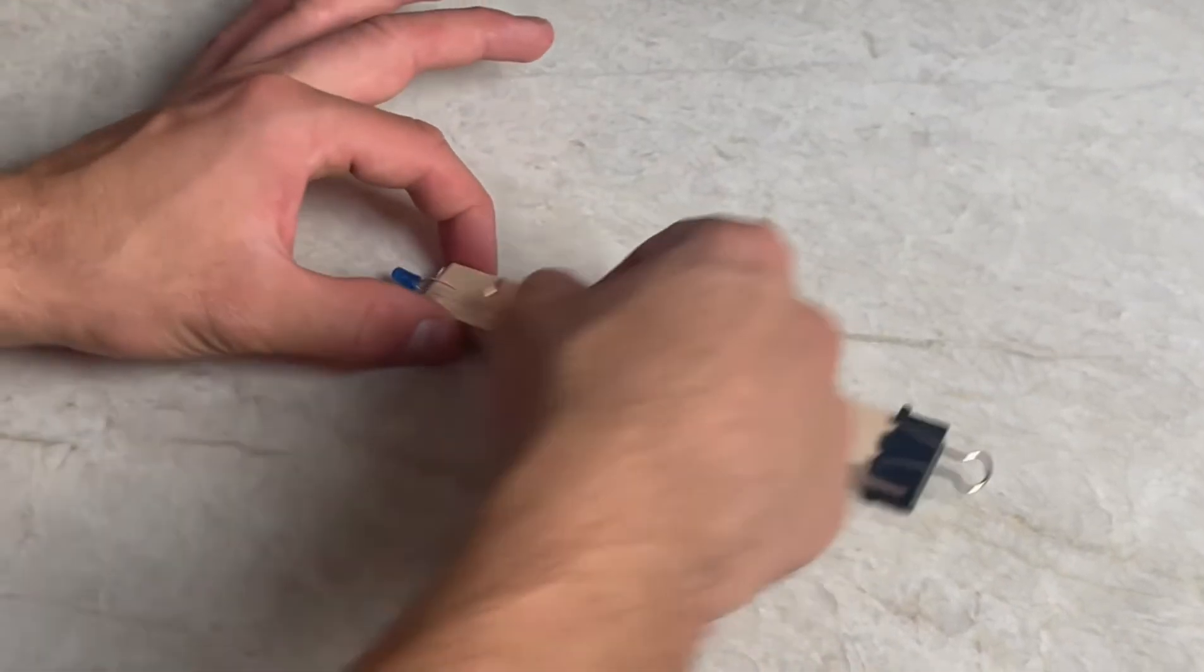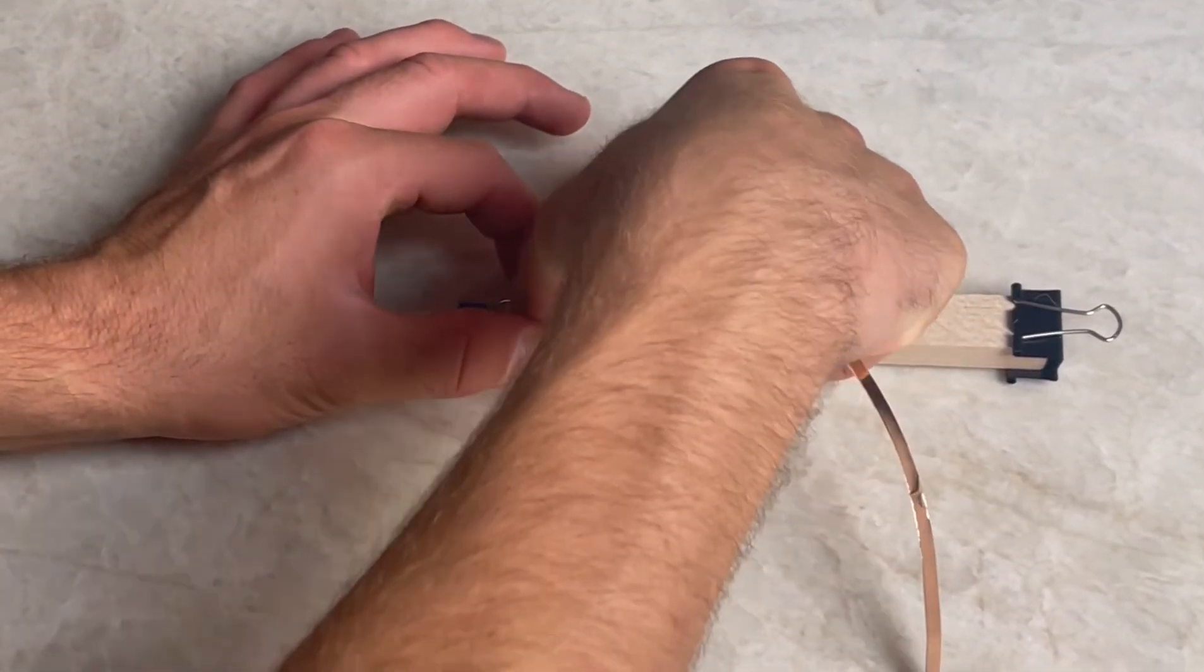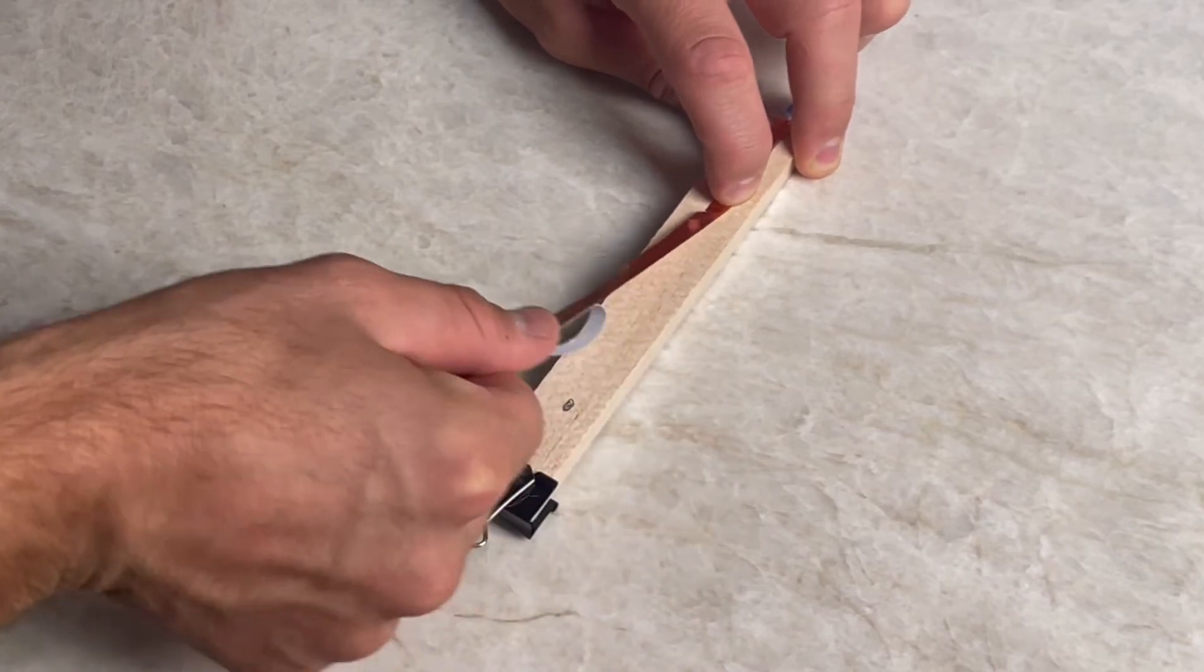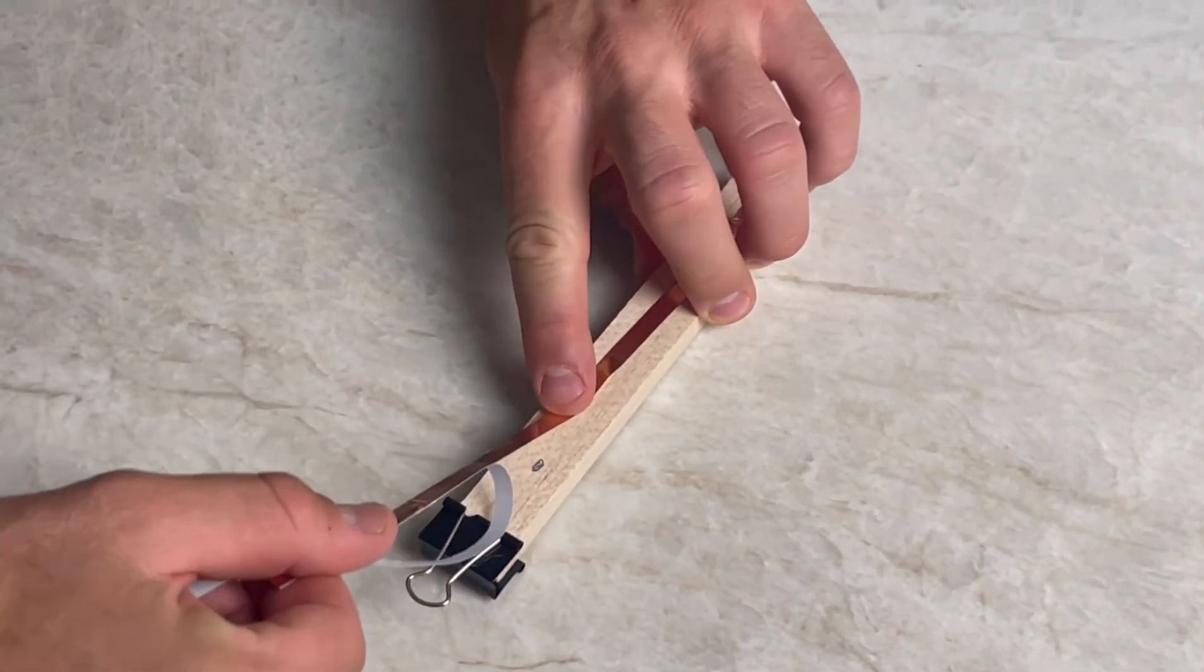Then it's time for the copper tape again. Start up at the metal wire coming out of the LED on this end and then slowly go down until you reach that circle that you just made.